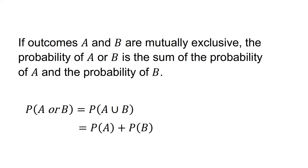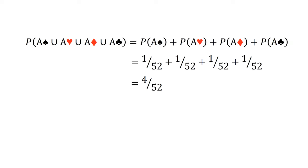Third, if outcomes A and B are mutually exclusive, the probability of A or B is the sum of the probability of A and the probability of B. That is, p(A or B) = p(A ∪ B) = p(A) + p(B). For example, if we have a deck of 52 cards, the probability of pulling out an ace with a single draw equals p(ace of spades) + p(ace of hearts) + p(ace of diamonds) + p(ace of clubs) = 1/52 + 1/52 + 1/52 + 1/52 = 4/52.